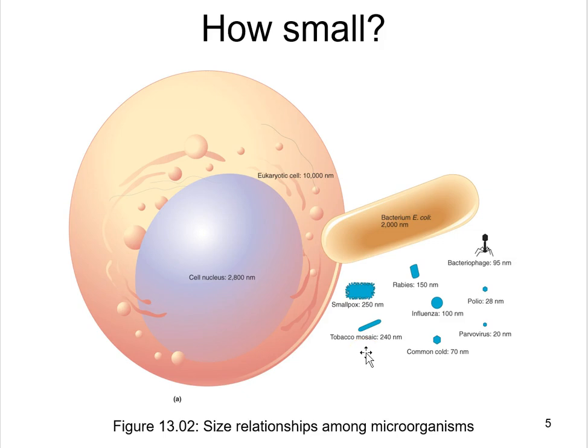Tobacco mosaic virus, the first virus ever discovered back in 1892, is a virus that infects plants — specifically tobacco plants. All of these viruses are really tiny, measurable in units of nanometers, and they were not something we could actually see until the 1930s when we invented the electron microscope, which lets us look at structures this tiny.